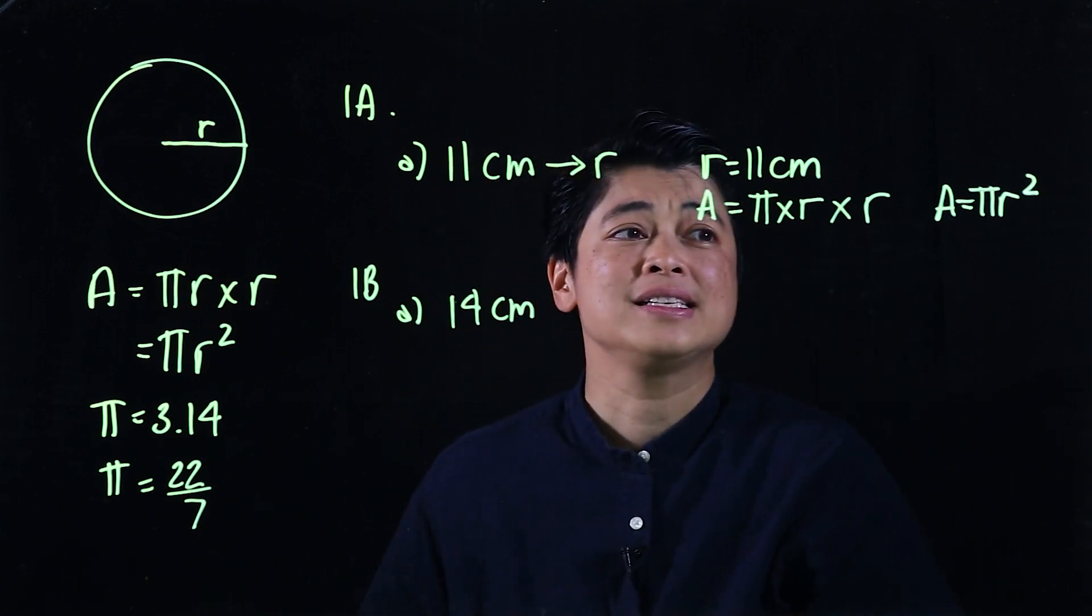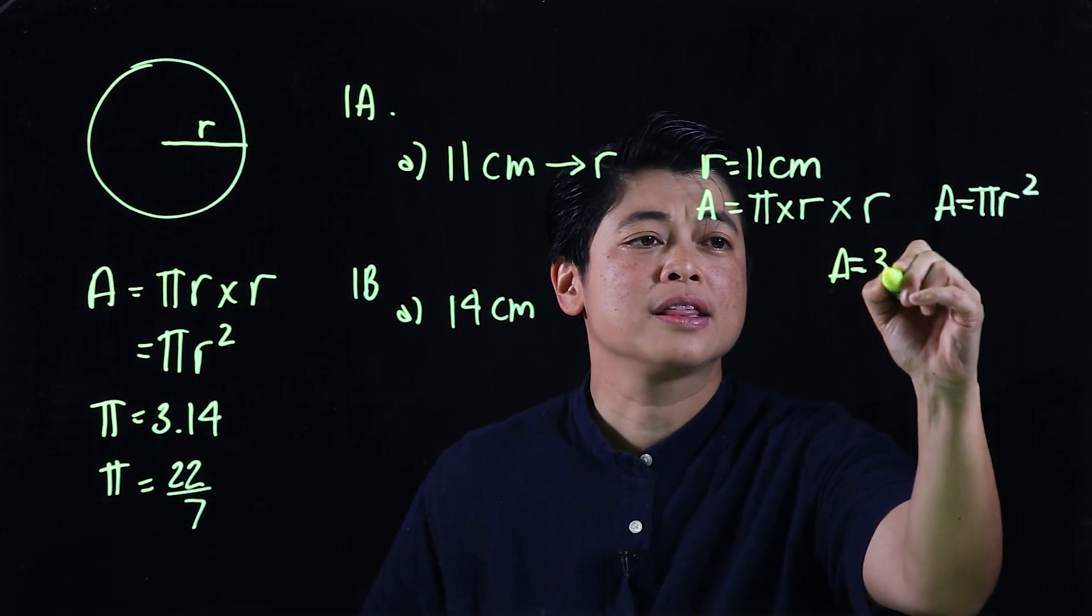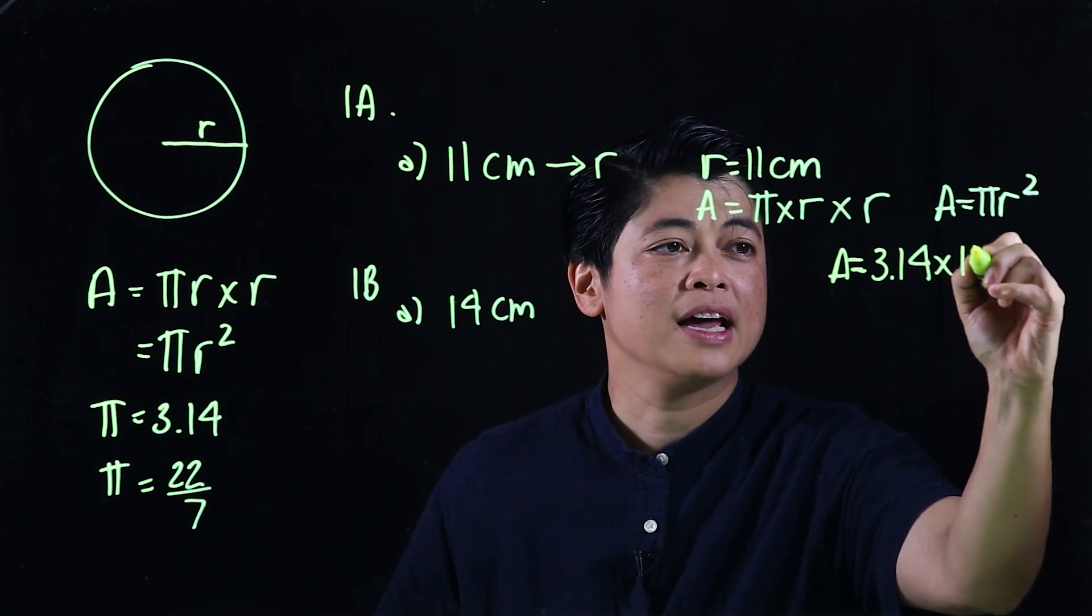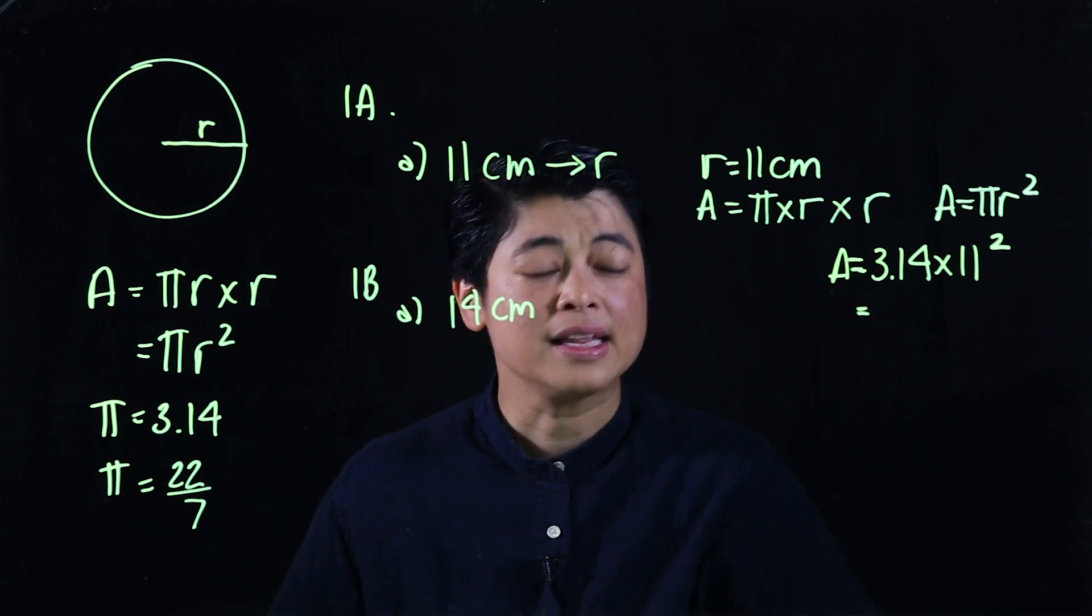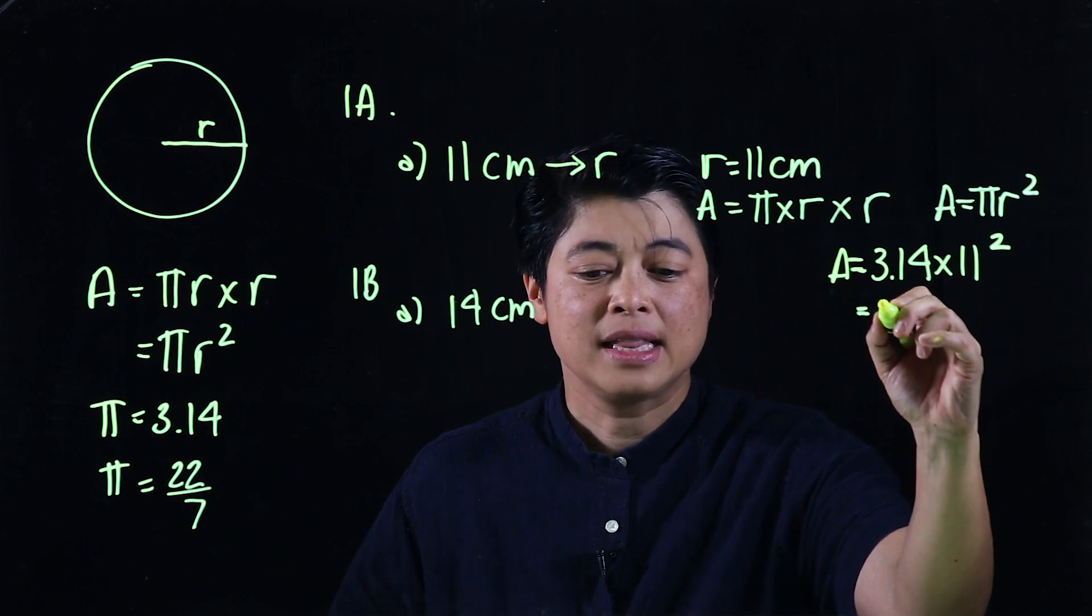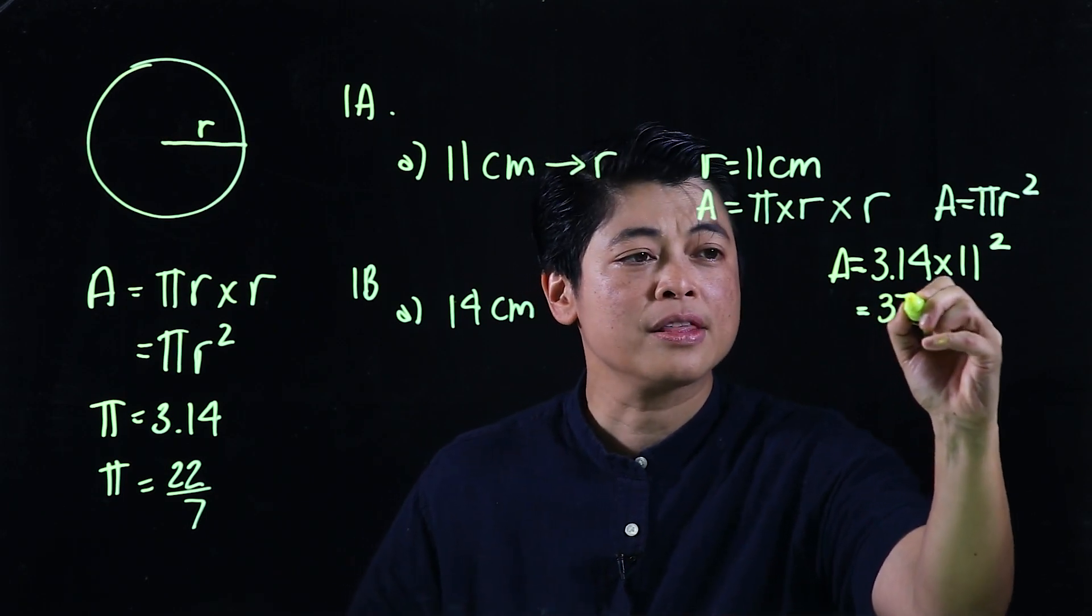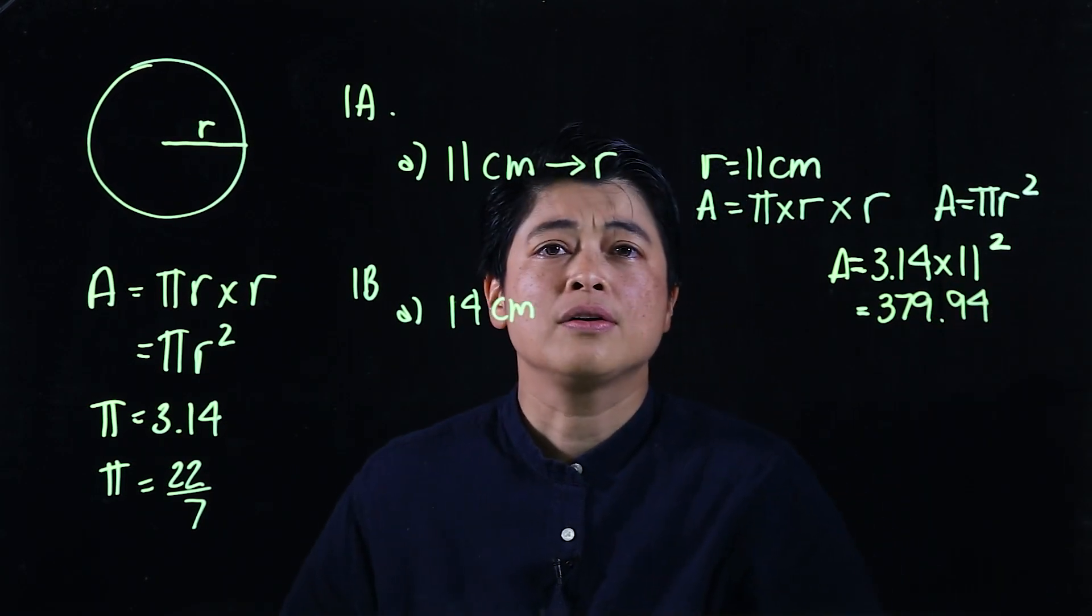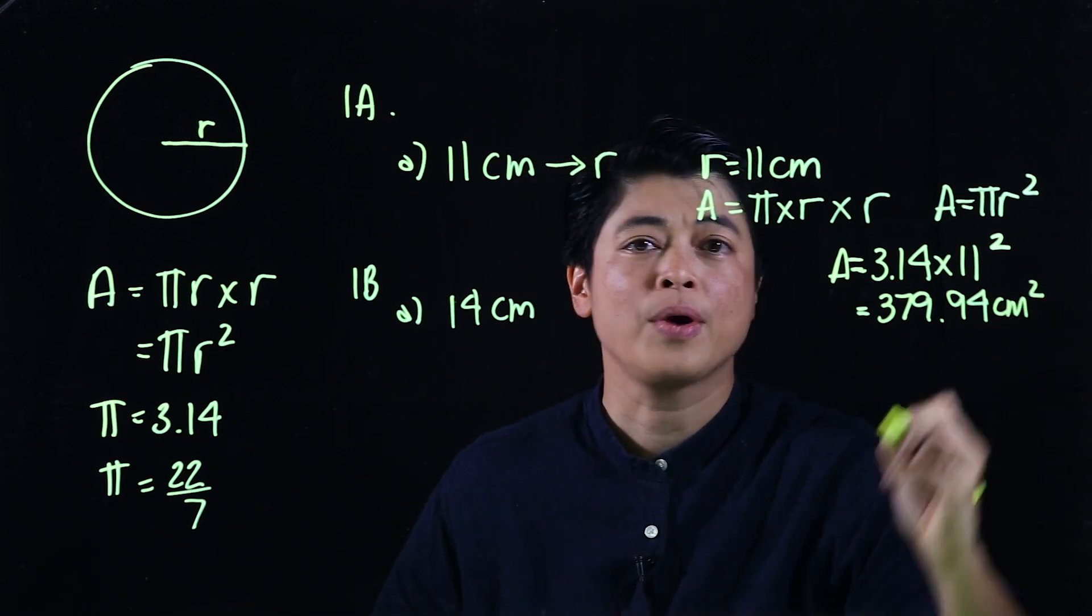So which means if I plug it into here, for now, it says that the radius is 11 centimeters, so that means our area is 3.14 times 11 squared. So when we do that and we put it in our calculator and it doesn't say correct to any decimal place, that means we need the full value, the full value being 379.94. Now the unit of measurement since it's area is centimeters squared.